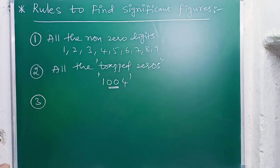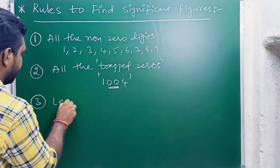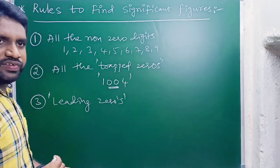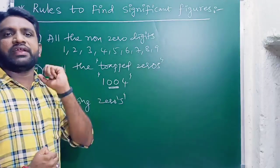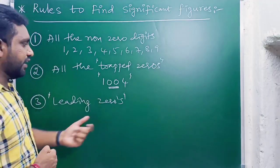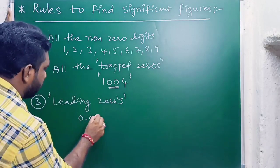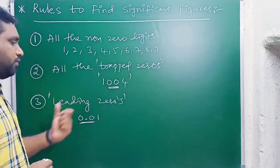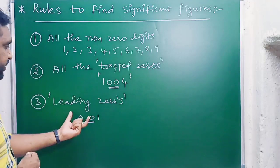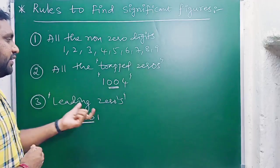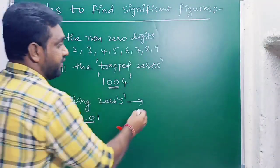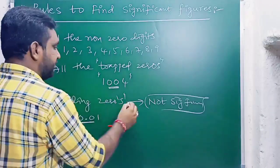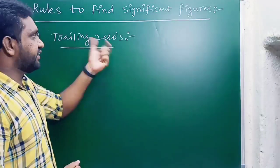Rule three is related to leading zeros. Leading zeros are the zeros which come at the beginning of a number. For example, in 0.01, these two zeros are leading zeros. Leading zeros are not significant — they are not considered as significant figures.